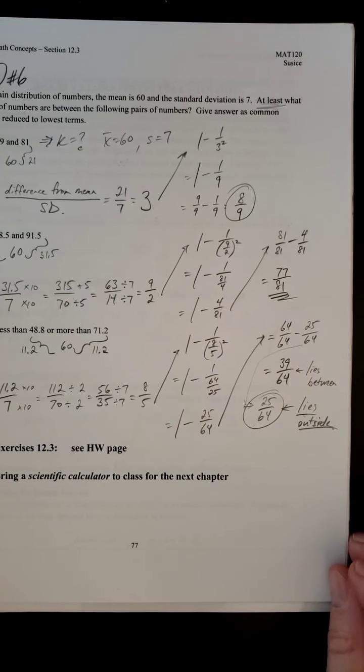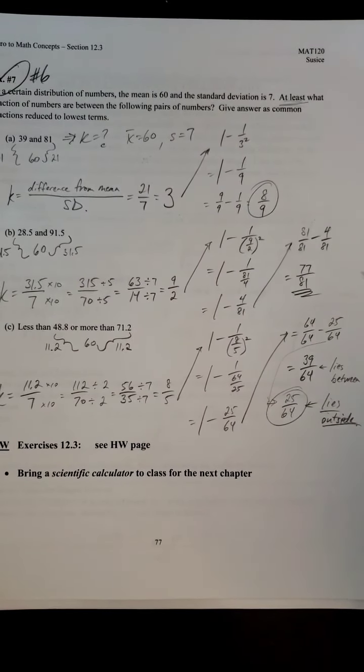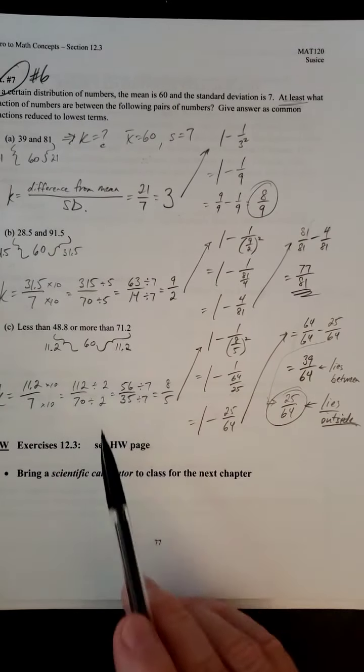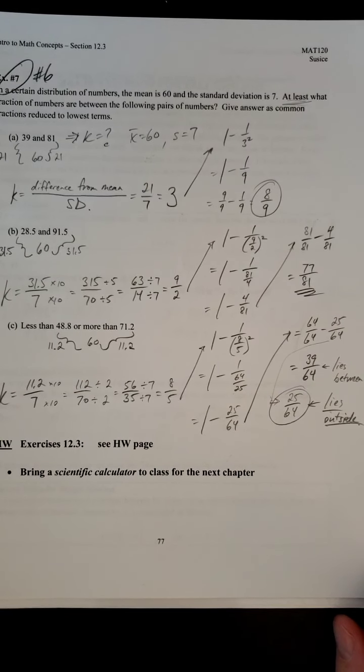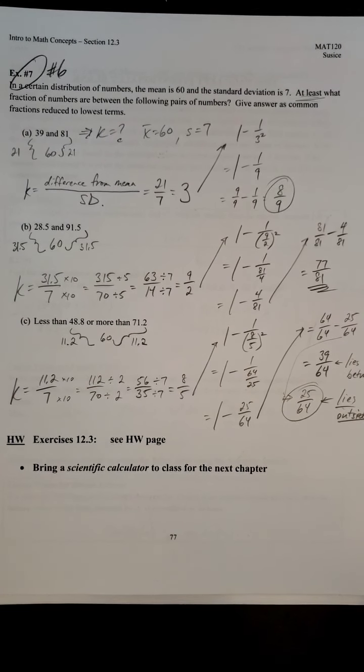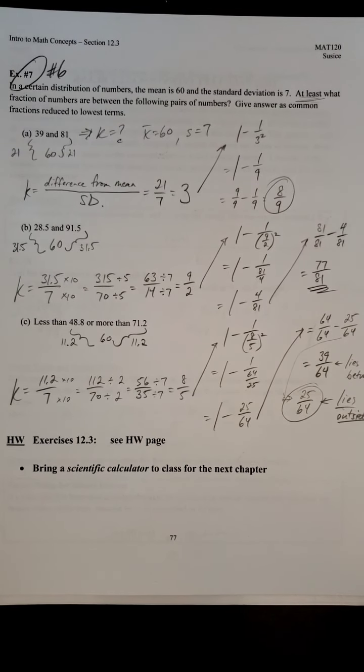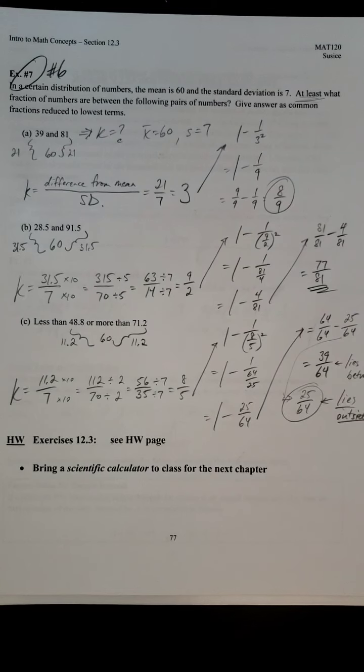So hopefully that is making sense to you a little bit. I know it can be a little bit different, especially when you've got to find the value of k and then find what Chebyshev says. It's a two-layered problem. But I know you can do it. So that wraps up Chapter 12. We've got one more chapter left, Chapter 13. So we'll see you in the next video. And keep strong and safe and healthy.